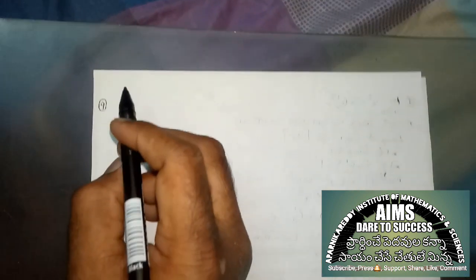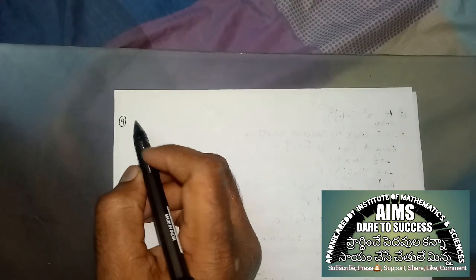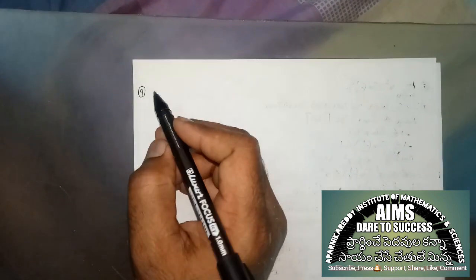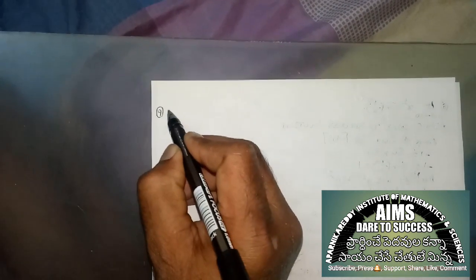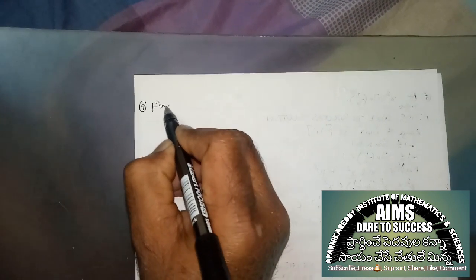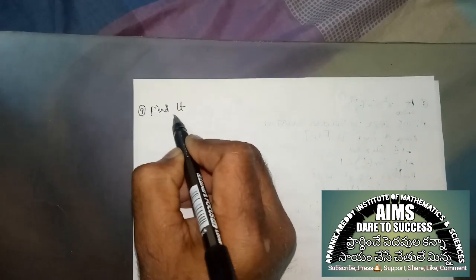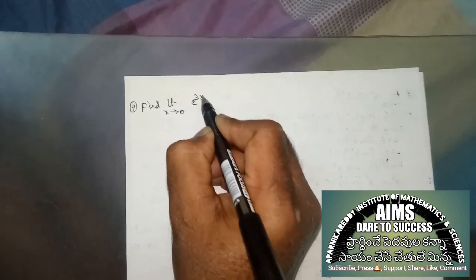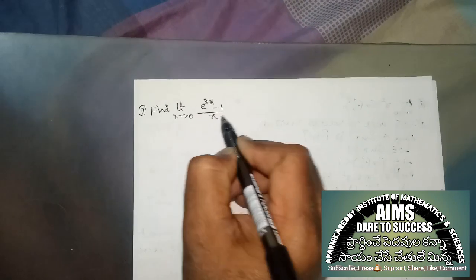Today we are discussing math limits and continuity. These explanations are also helpful for competitive exams and IIT-like exams. Question is: find limit x tends to 0, e power 3x minus 1 by x.